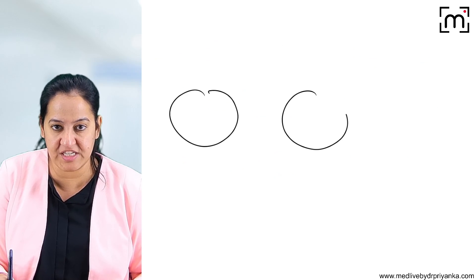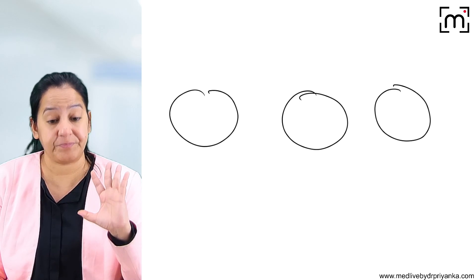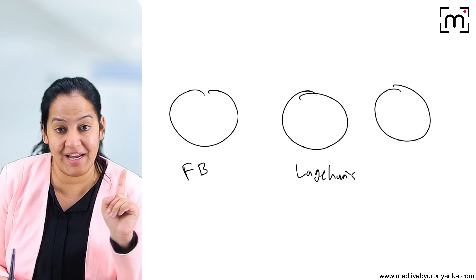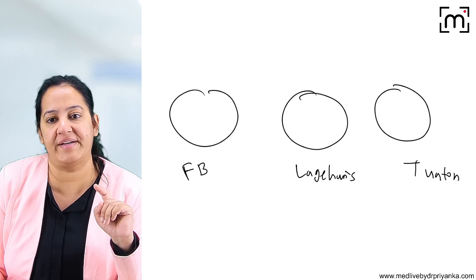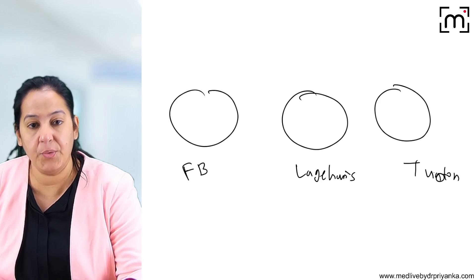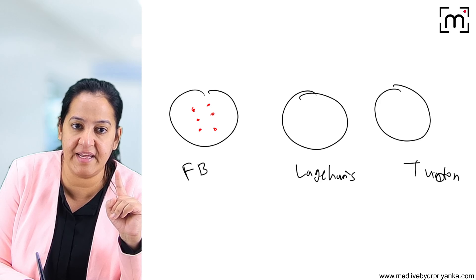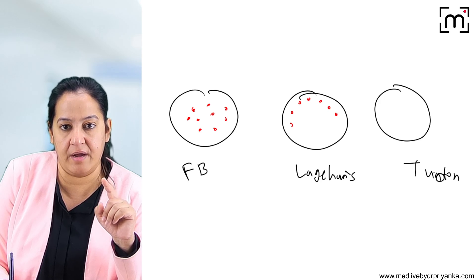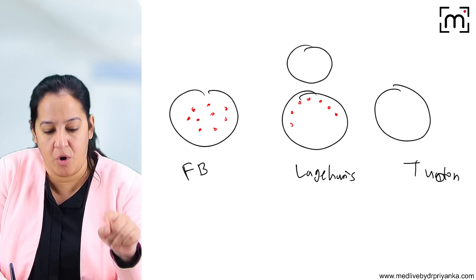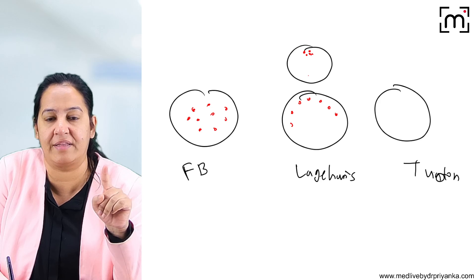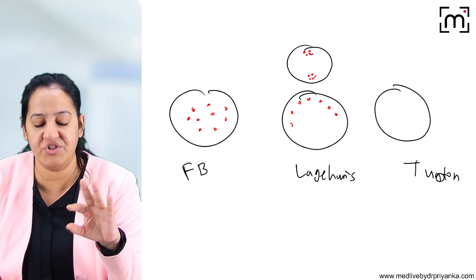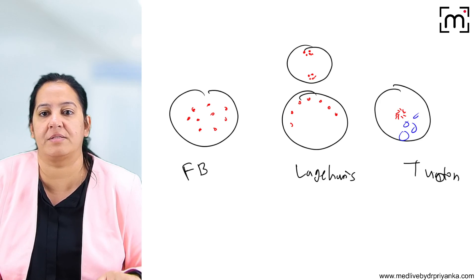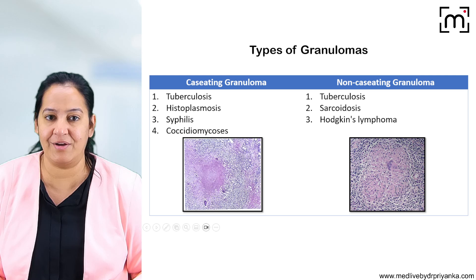Giant cells in various tumors include: anaplastic tumor giant cells present in giant cell tumor of bone, Reed-Sternberg cells present in Hodgkin's lymphoma, and osteoclastic giant cells also seen in giant cell tumor of bone. To summarize the types: foreign body giant cell — nuclei scattered haphazardly; Langhans giant cell — nuclei at periphery forming horseshoe ring or arranged at poles; Touton giant cell — nuclei forming a ring-like structure at center with vacuoles in cytoplasm.